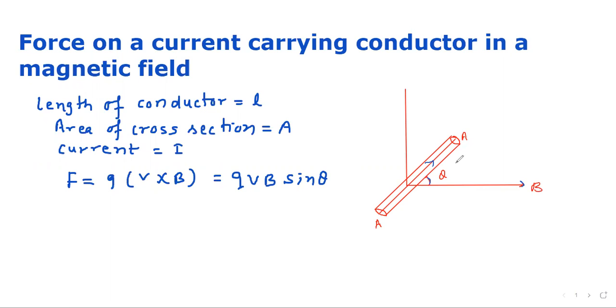Now, let's consider the number of electrons in this conductor. The number of electrons in the conductor, suppose N, will be equal to electron density n times the volume of the conductor. The area of cross section is A and the length is L, so the total number of charge carriers or electrons will be n times A L.